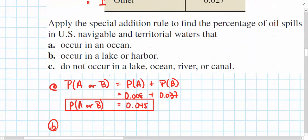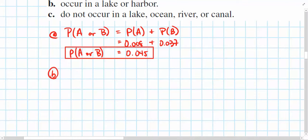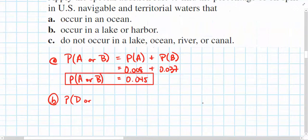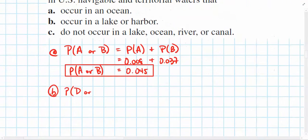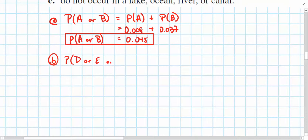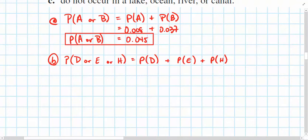And if we were to write this out, it might look something like this. The probability of event D or... Oh, I forget the other two. Let me double-check them. D, E, or H. D, or E, or H. So, the probability that a spill occurs in either of those locations is simply equal to the sum of each of those probabilities. The probability of it happening at location D plus the probability of it occurring in location E plus the probability of the oil spill occurring in event H.